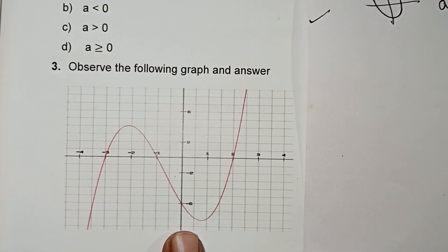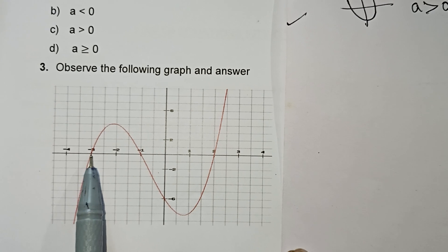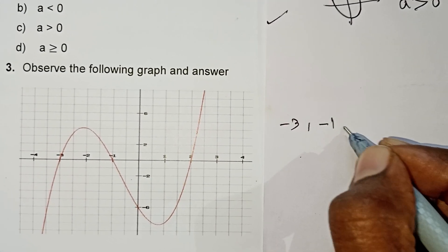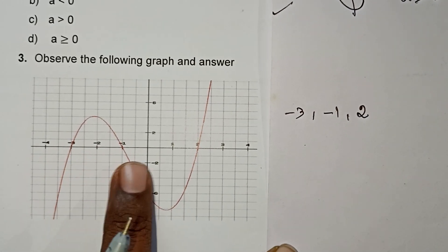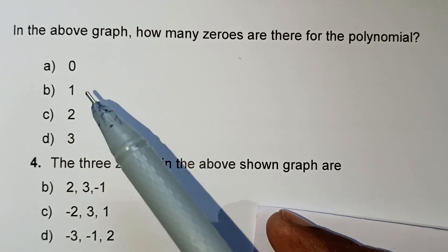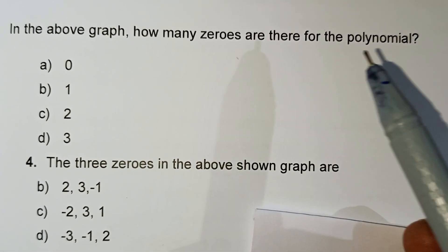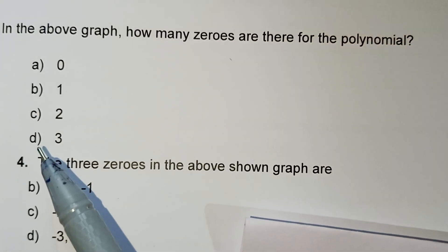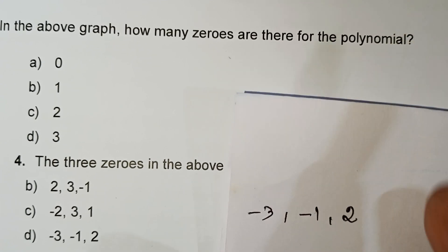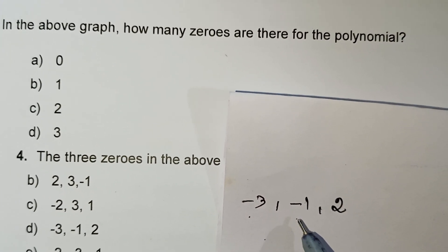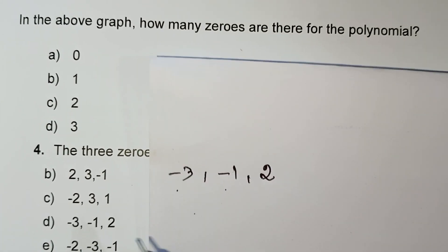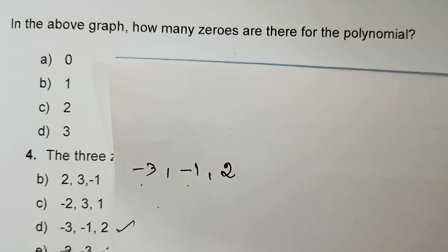Observe the graph and answer the following questions. In this graph, the points minus 3, minus 1, and plus 2 are equal to the x-axis — meaning those are the zeros. First question: how many zeros are there in the polynomial? The graph shows 3 zeros. The three zeros of the shown graph are minus 3, minus 1, and plus 2. So D option — 3 — is the correct option.